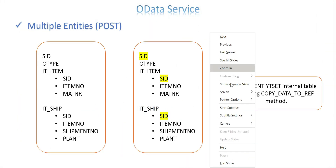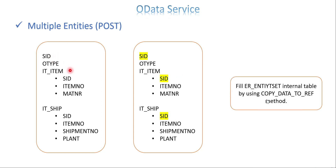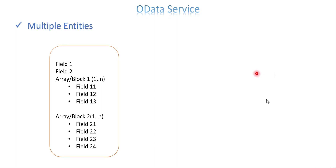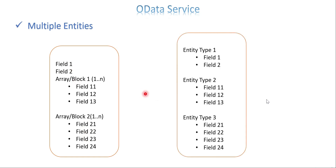Here on the slide is a design — it's a deep entity design. SID and item is actually a deep entity which has a dependency; SID is common in header, item, and shipping-related information, so for that normally we go with deep entity using copy-data-to-ref to send information from the internal table. Our structure here has no dependencies — field one, field two, field eleven, twelve, thirteen, twenty-one, twenty-two, twenty-three — different fields, no common fields. Technically each group is one internal table, and at the OData SEGW project level we convert these as different entity types: one, two, three, and so on.